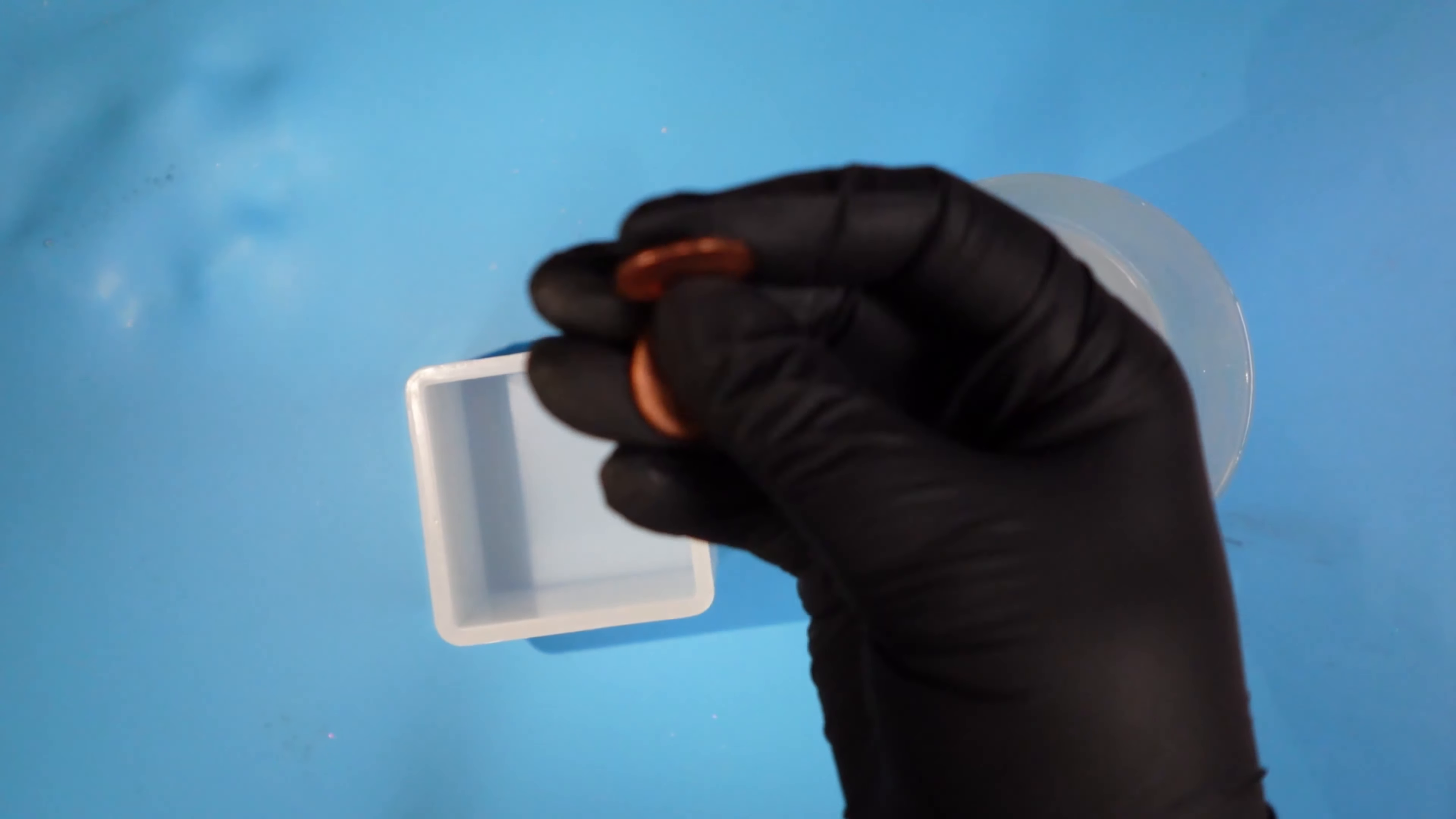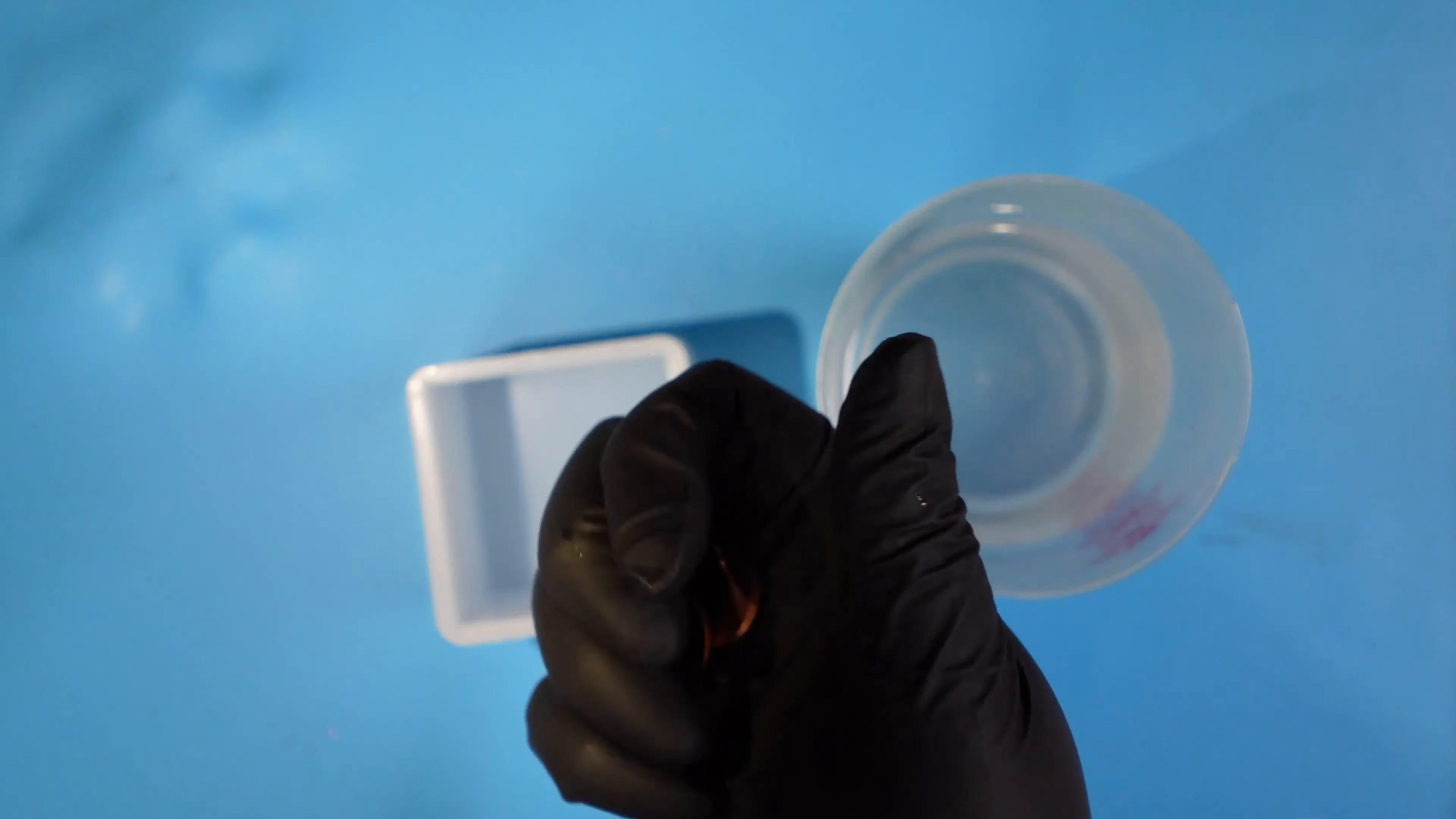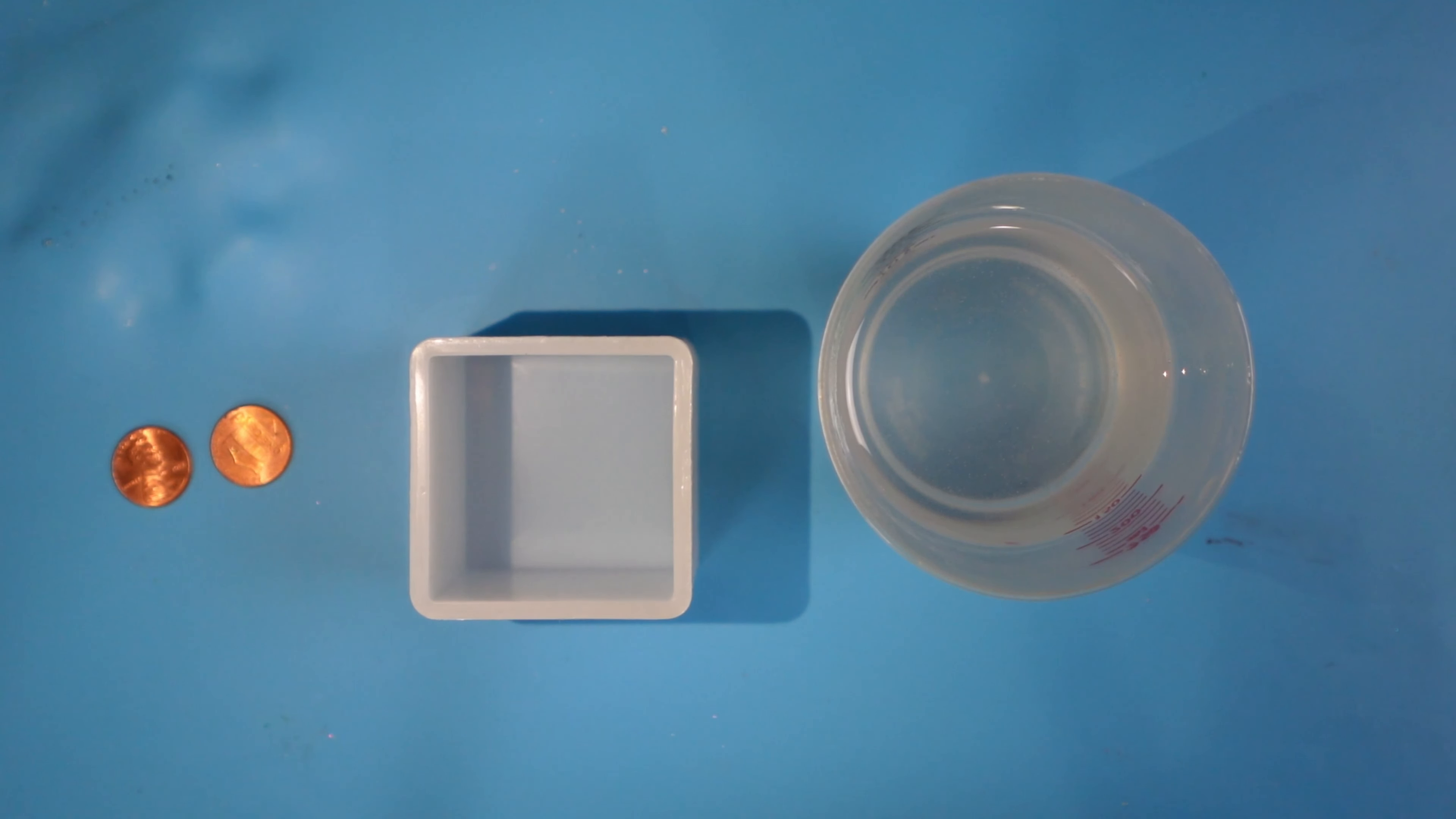I bet you're wondering why does she have pennies on her mat? So today what we're gonna do is we're gonna take a cube mold and we're gonna fill it halfway with resin, and then we're gonna put the pennies in after it cures and then put more resin on top. So the theory is it's gonna look like those pennies are floating.